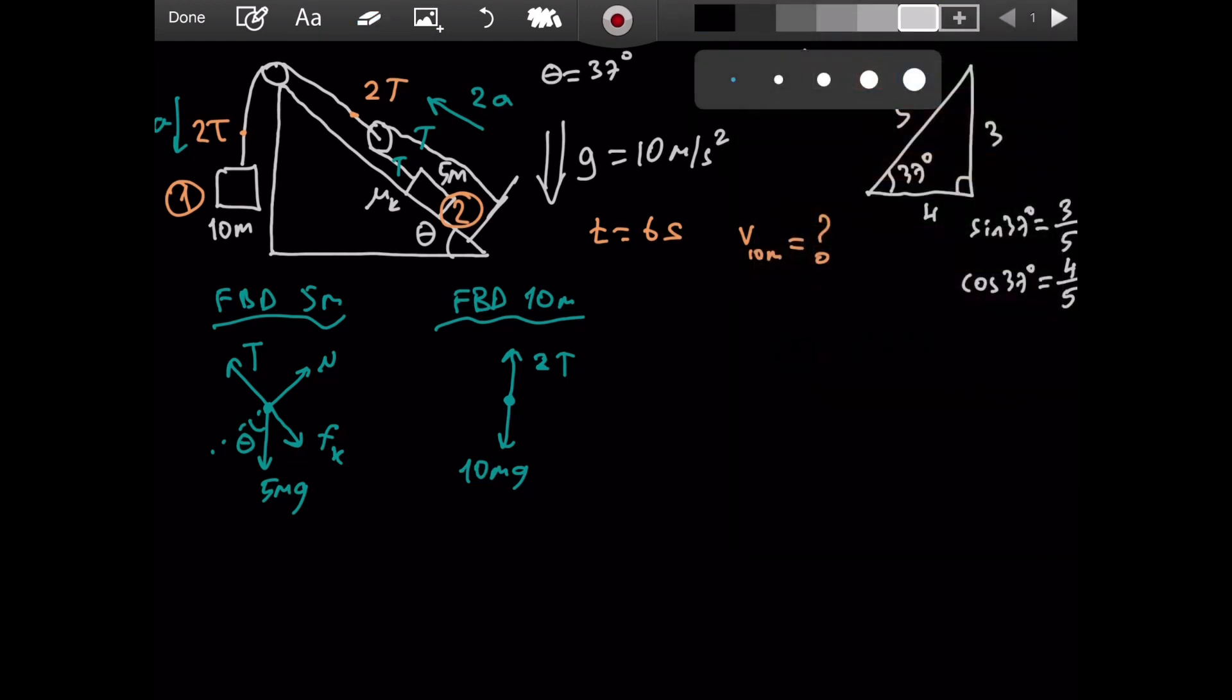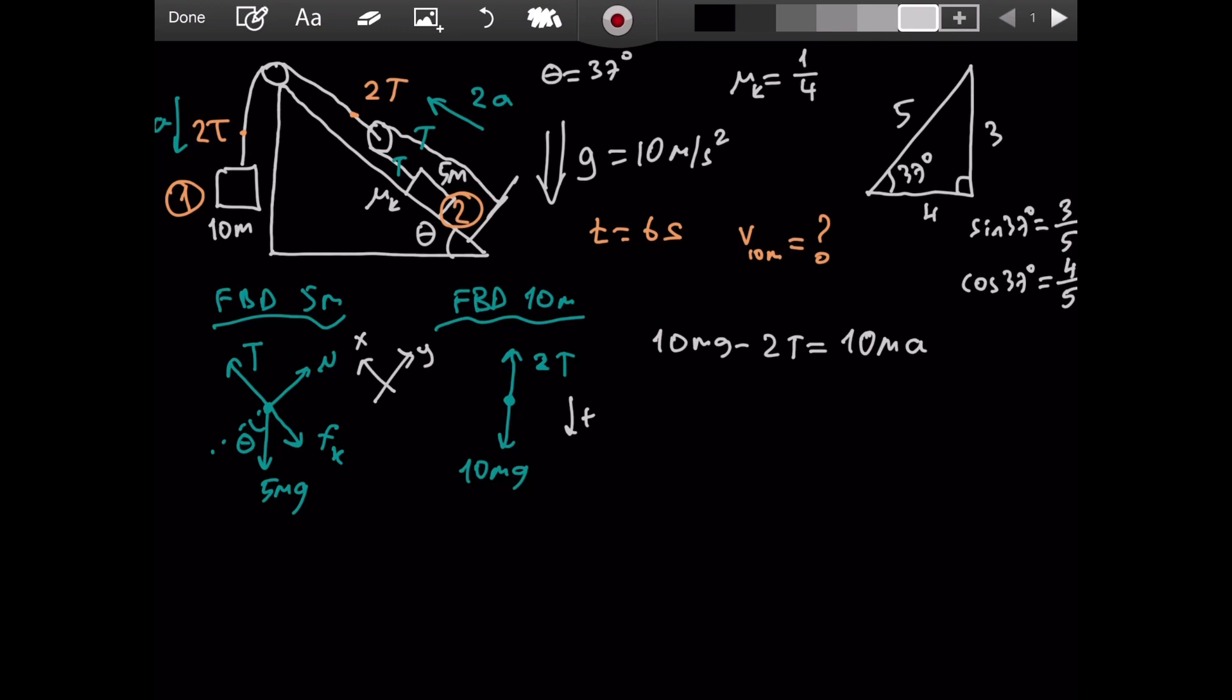Now, let's write the force equations. We are set to go. So I start with the 10m object, object 1. And also, this is the positive direction. And for the 5m, the coordinate system is like this. I try to choose the direction of the acceleration to be positive so that I don't need to worry about negative signs. So from the 10m object, we see that 10mg minus 2T equals, this is the net force, should equal mass times acceleration. What is the mass? It is 10m. What is the acceleration? It is a.